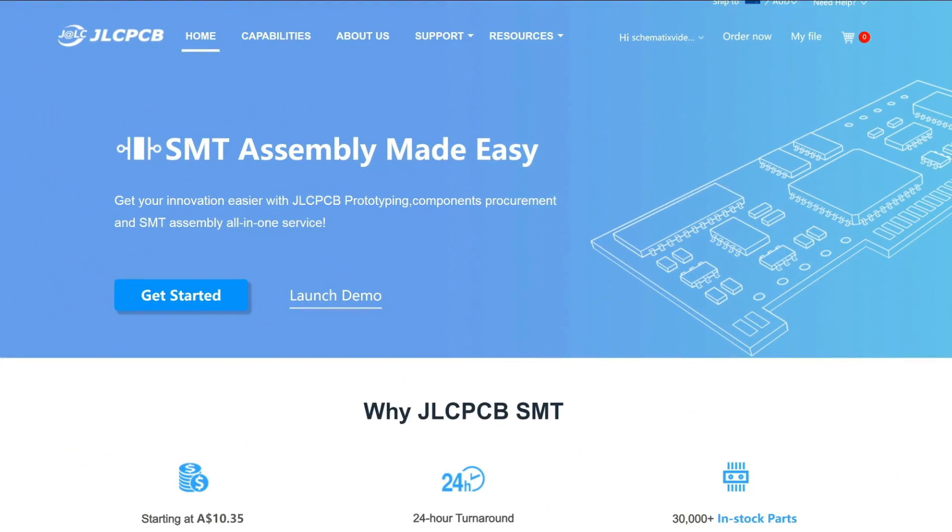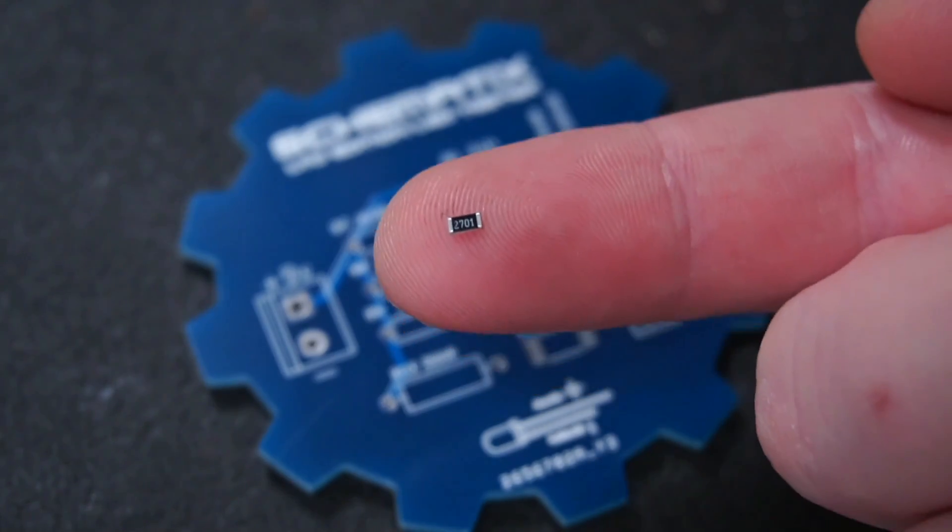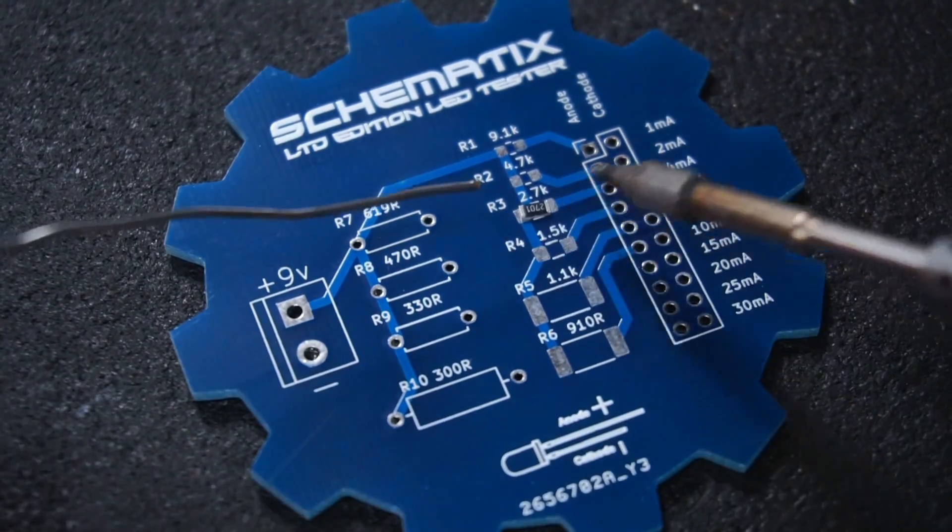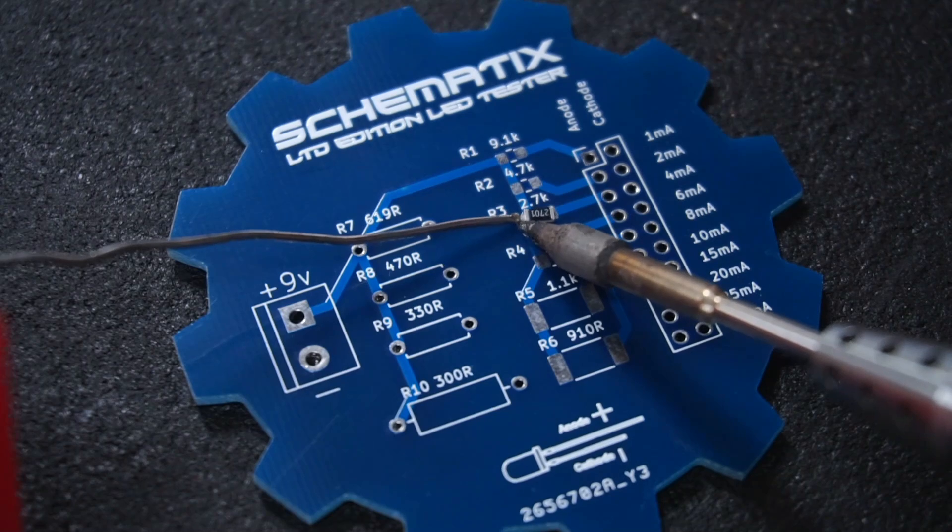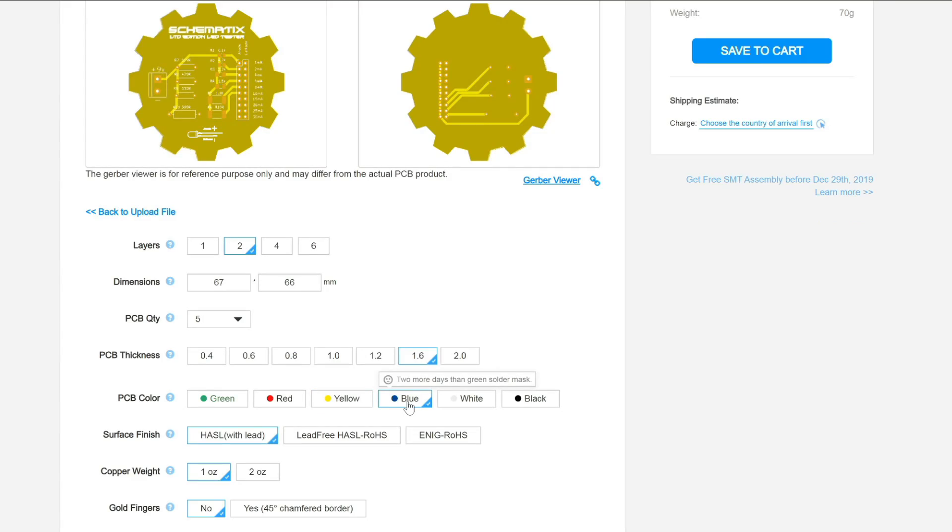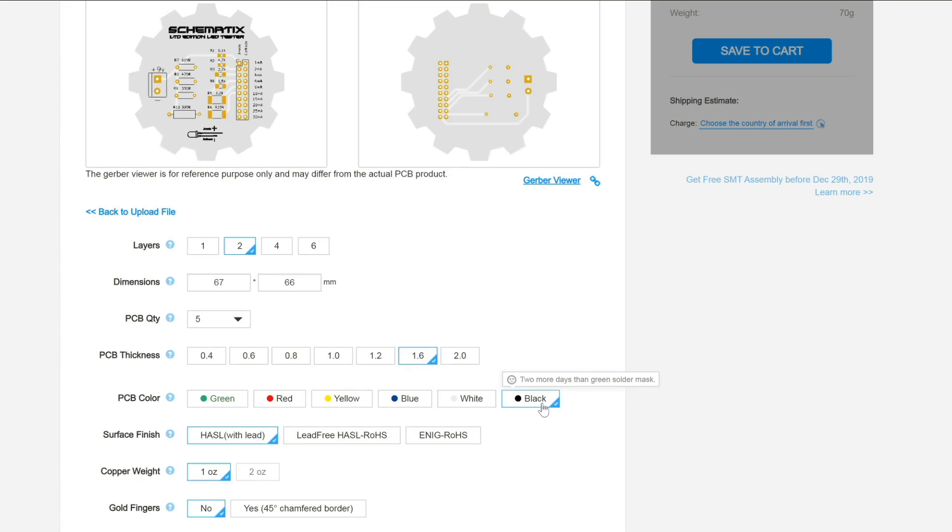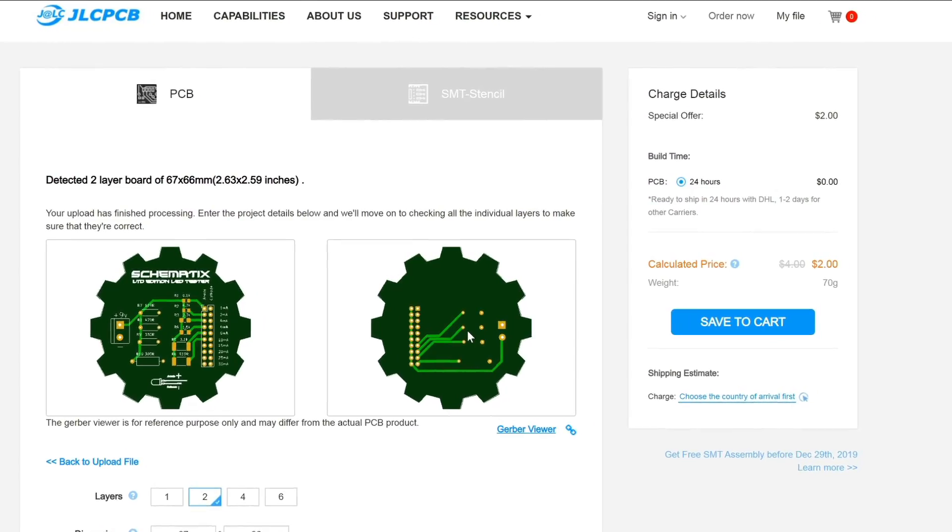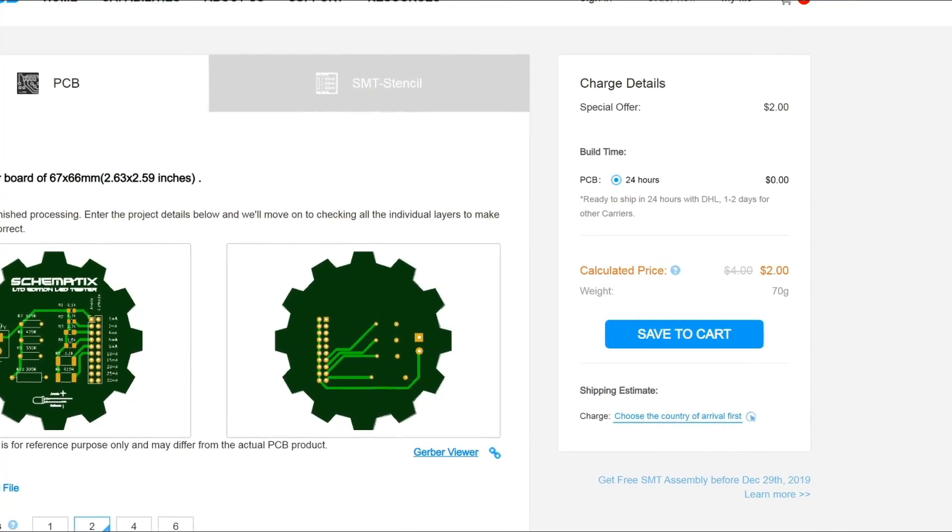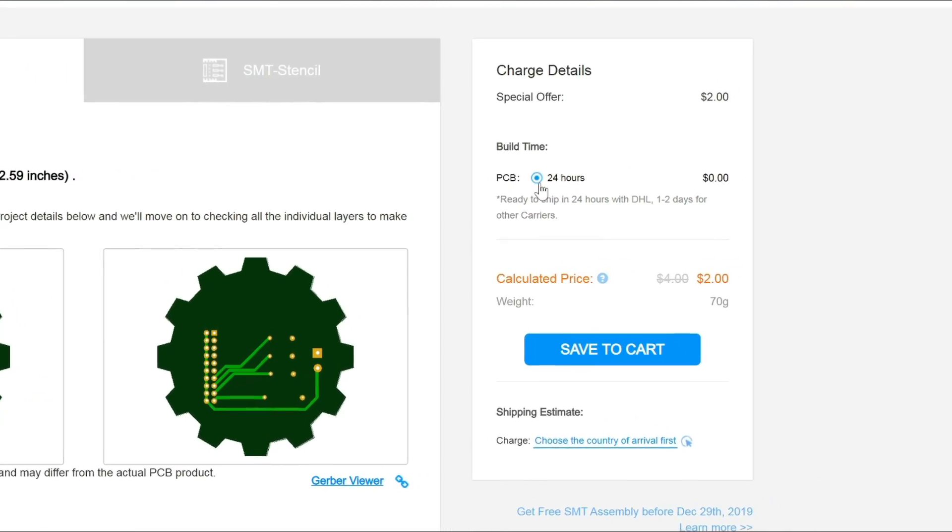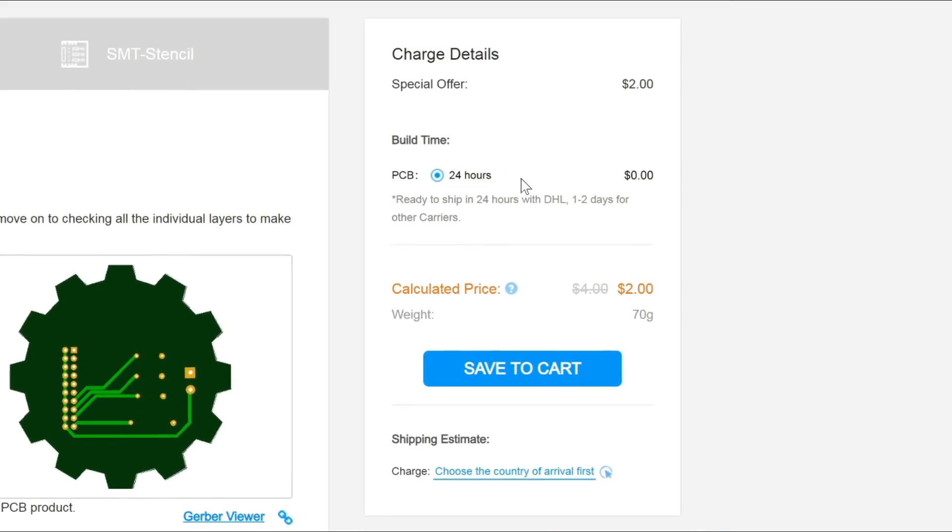JLCPCB now offers SMT assembly service, allowing their customers to receive complete, ready-to-use circuit boards right out of the box without the need to solder fiddly surface mount components. With a multitude of design options, fast production time, and with five PCBs costing less than a cup of coffee, give JLCPCB your next PCB project.